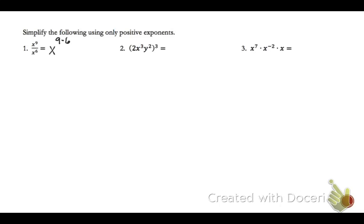Wherever the larger exponent started, either numerator or denominator, that's where your term will end up. So x to the 3rd is in the numerator. All we have in the denominator is 1, and so we don't have to write that.